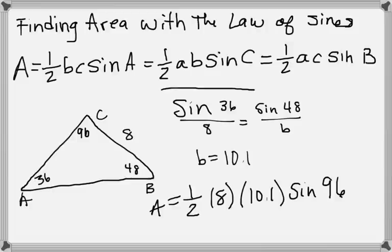I'm going to take the formula and we're going to use the one in the middle, one-half AB sine C. We're going to do one-half times 8 times 10.1 times sine of 96. When you work that all the way out, you get 40.2 units squared.